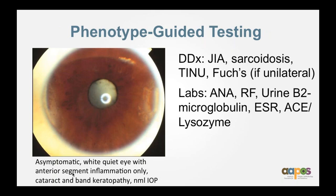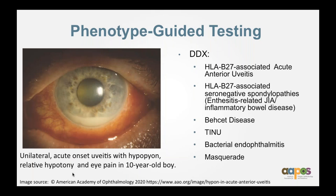Phenotype-guided testing: for an asymptomatic quiet eye with anterior segment inflammation only, cataract and band keratopathy, and normal IOP, the differential is JIA, sarcoidosis, perhaps sarcoid-related, or TINU. Do a typical JIA workup with ANA and RF. In contrast, for a unilateral acute onset uveitis with hypopyon, relative hypotony, and eye pain in a 10-year-old boy, the differential is HLA-associated acute anterior uveitis or HLA-B27-associated seronegative spondyloarthropathies including enthesitis-related JIA or inflammatory bowel disease, Behçet disease, TINU, bacterial endophthalmitis, or a masquerade. Make sure the child moves so you can confirm the hypopyon isn't shifting.